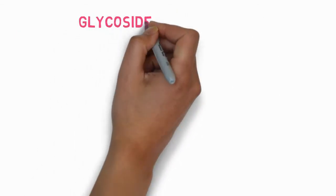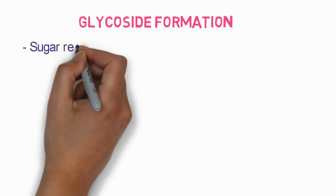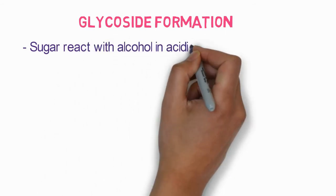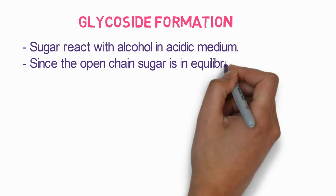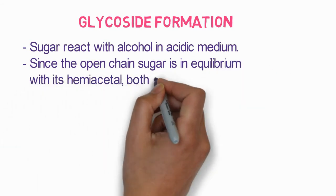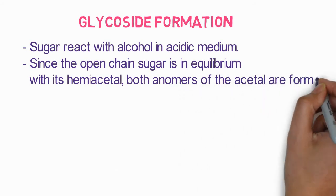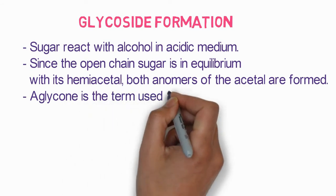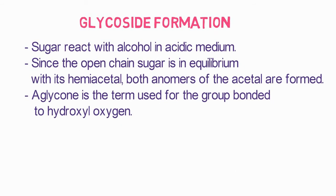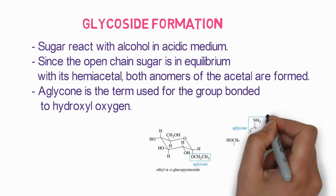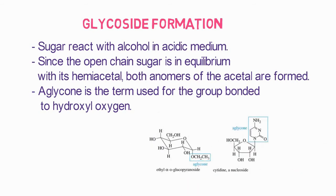The next reaction is glycoside formation. Glycosides are derivatives of sugars where a monosaccharide reacts with an alcohol in an acidic medium. Since the open-chain sugar is in equilibrium with its hemiacetal, both anomers — alpha and beta — at the anomeric carbon are bound. The term 'aglycone' refers to the group bonded to the hydroxyl group. Examples include methyl glycosides and nucleosides.